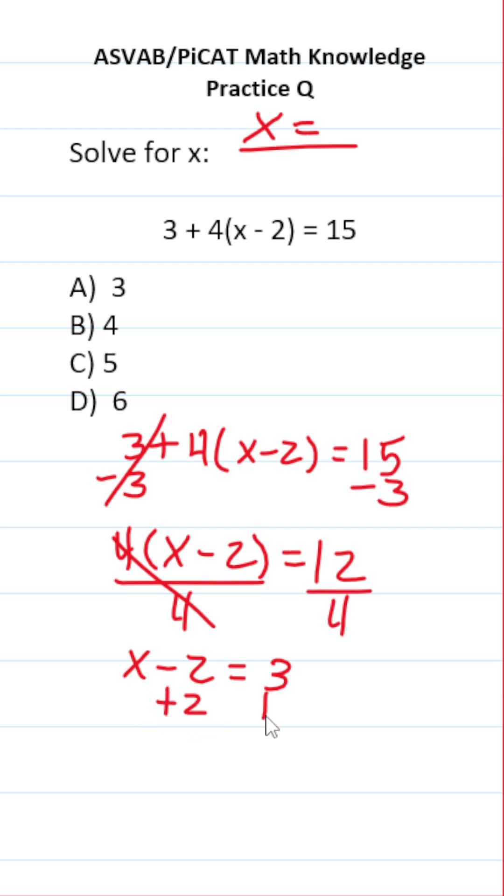Again, to get x by itself, we're now going to add 2 to both sides. This crosses out, leaving you with x over here. 3 plus 2 is 5. So x equals 5.